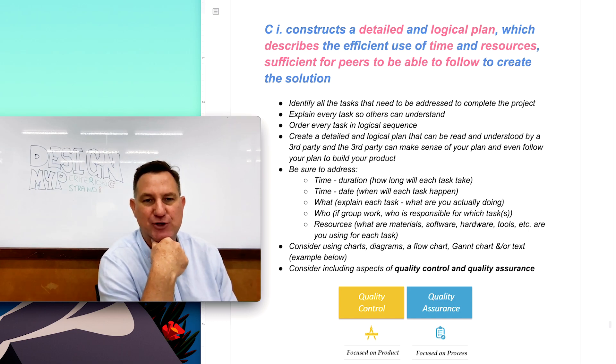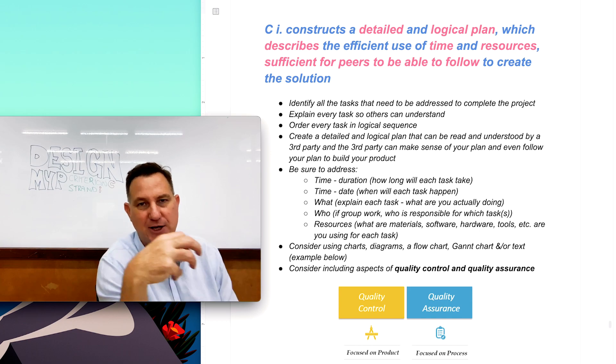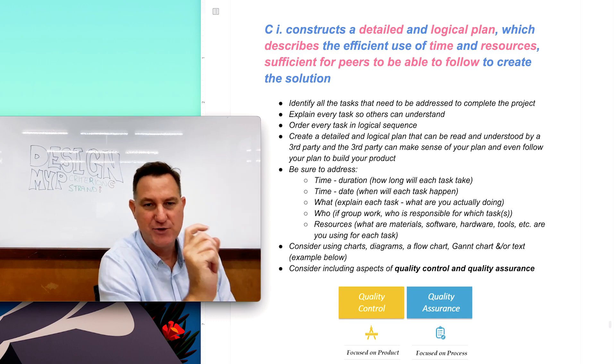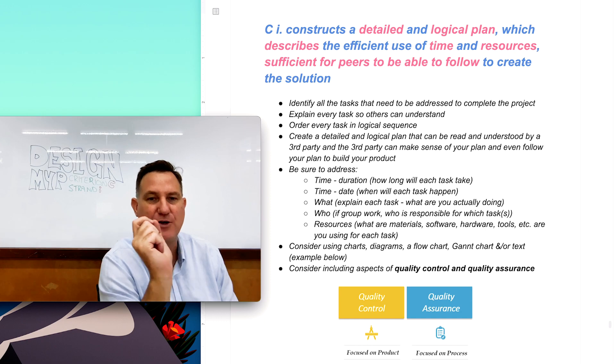So here's how to do it. First of all, identify all the tasks that you need to actually complete to get your product built. So the focus is on building the product. What do you need to do? Once you've got all the tasks listed, then put them in an obvious and logical sequence. Step one, step two, step three. So that's important.